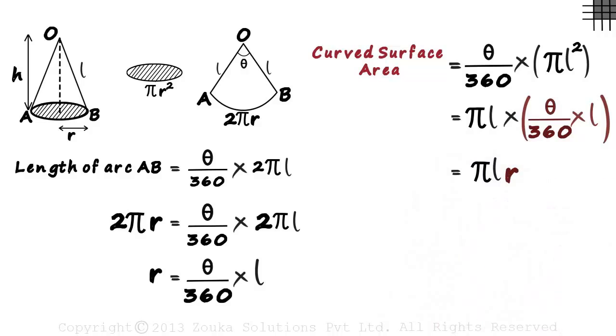Let us review what we just did. We found out the length of arc AB in two different ways and equated them. And then we found out the curved surface area using the formula of a sector of a circle. And then finally substituted the value of R in this formula to eliminate theta.